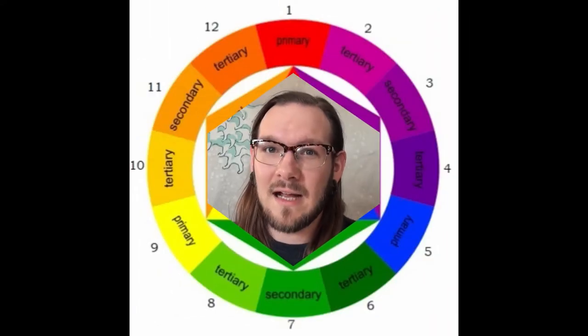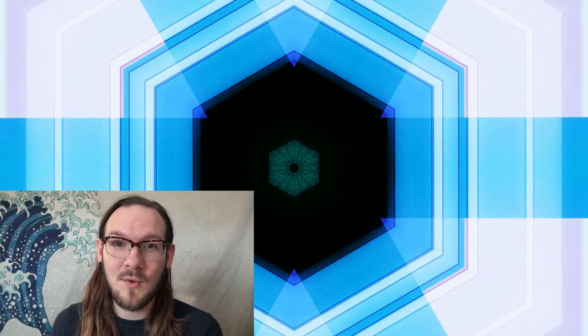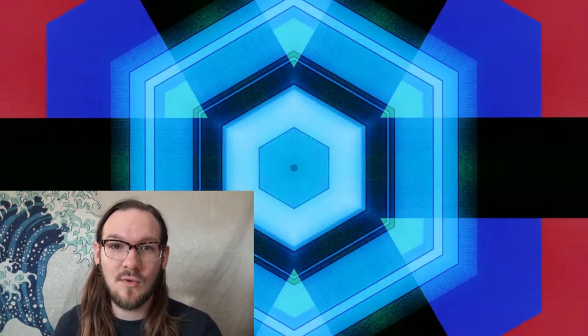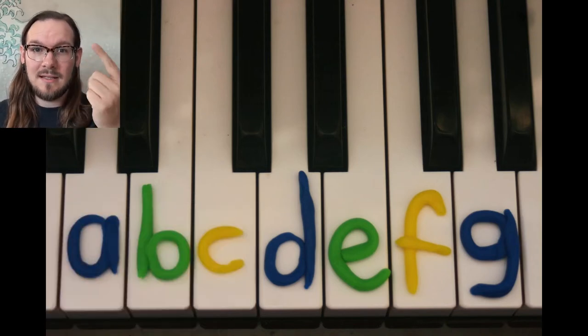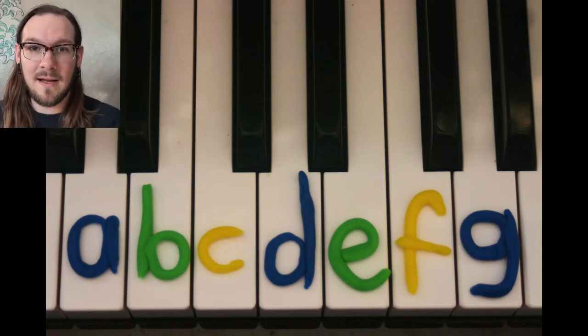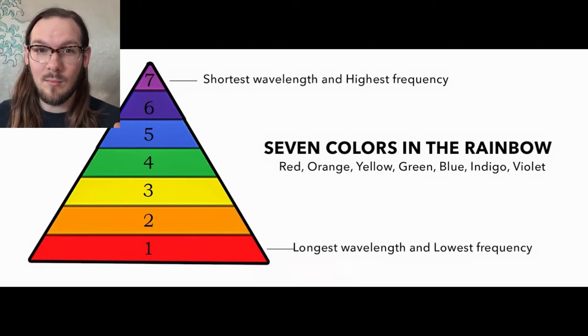I want to give you a few examples of what I mean. I came across the color wheel and noticed that it's almost exactly the same thing as the circle of fifths. In music we have seven notes — A, B, C, D, E, F, G — and then it repeats back to A. In color and physics, we have the seven primary colors: red, orange, yellow, green, blue, indigo, and violet, just like A through G are primary musical tones.